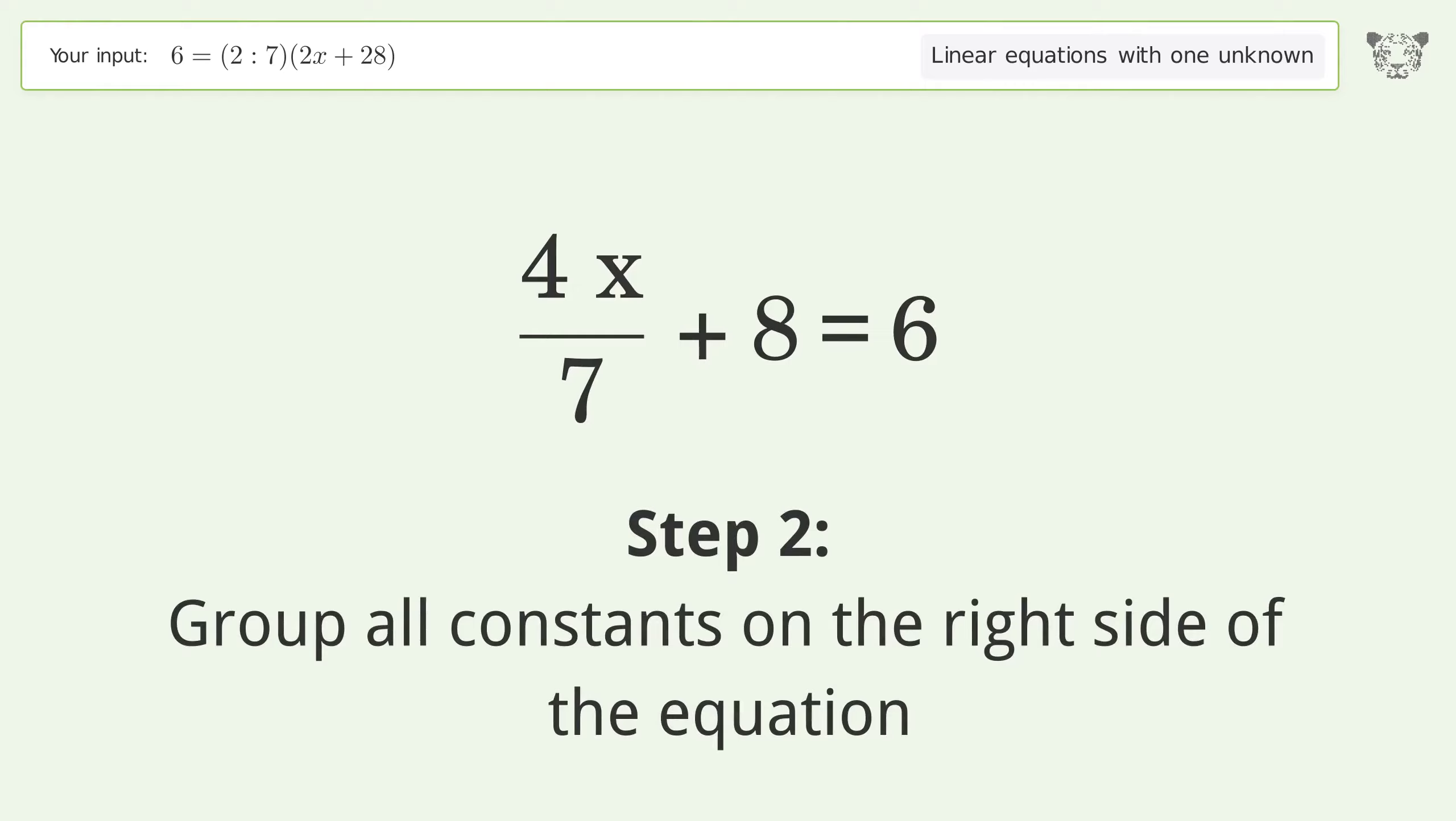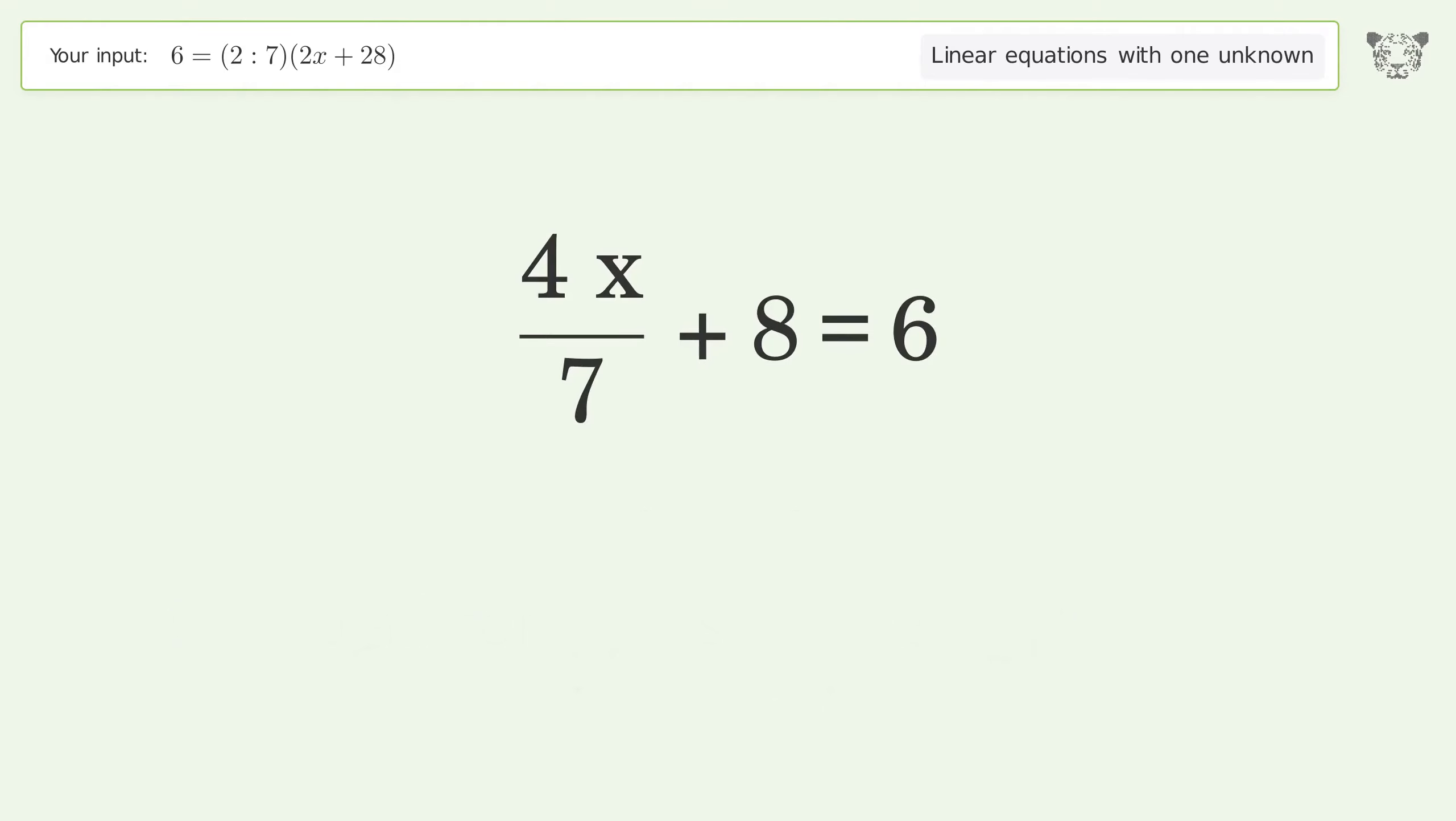Group all constants on the right side of the equation. Subtract 8 from both sides. Simplify the arithmetic. Isolate the x.